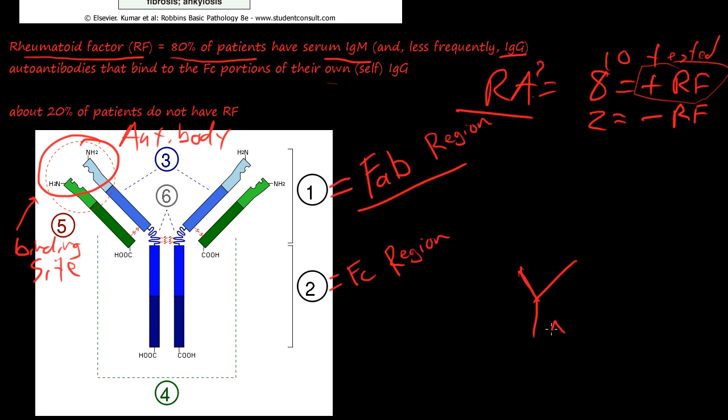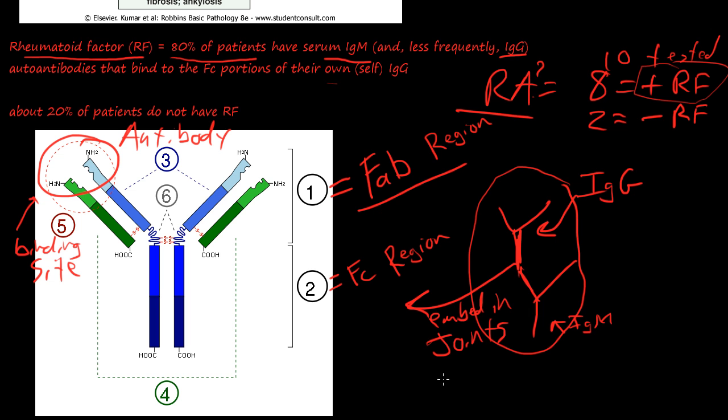This would be an IgM. For some reason, this would be an IgG antibody. Your own IgM antibodies attach to your own IgG antibodies. That's problematic because this, in and of itself, is what they call an immune complex.